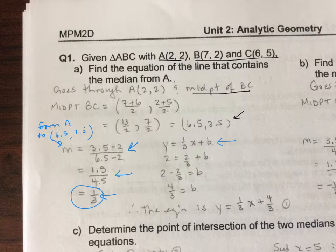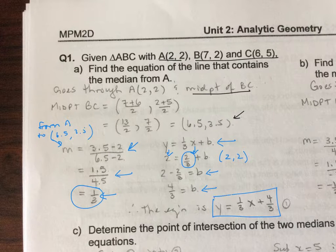So I put the slope into y equals mx plus b, and then I subbed the point A, which is 2 comma 2. I subbed that in for the x and the y. So the y became 2, and then 2 times 1 third becomes 2 thirds. Subtract 2 thirds from both sides. I got a common denominator and subtracted, and I came up with this as our equation for our median from A to BC.